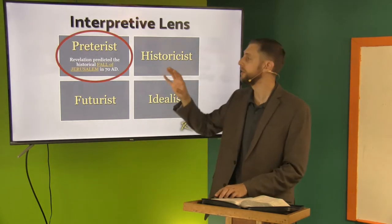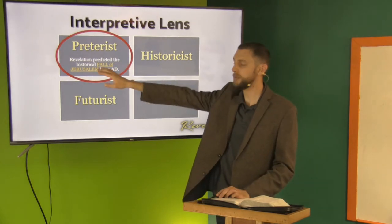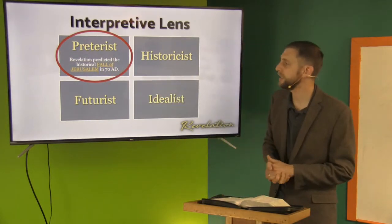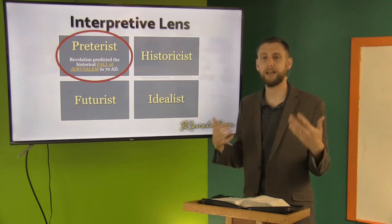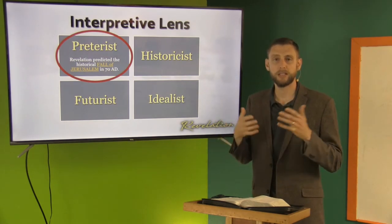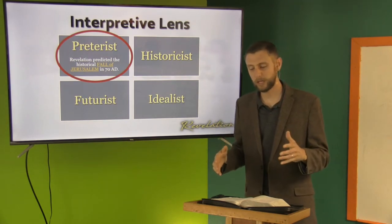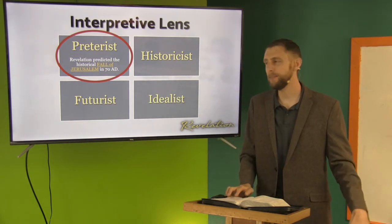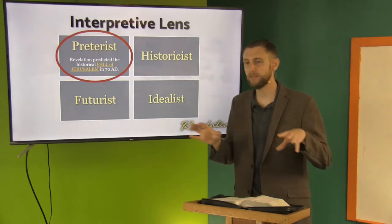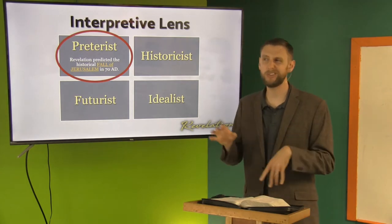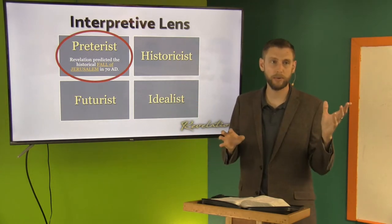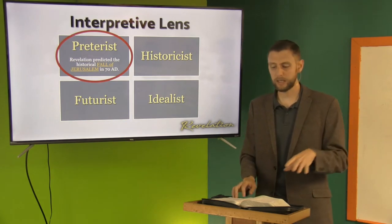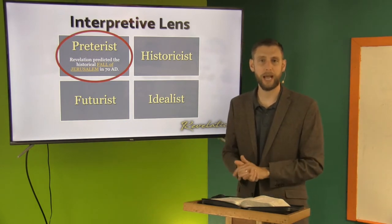Just a quick review. The preterist perspective, when reading this book, sees that Revelation predicted the historical fall of Jerusalem in 70 AD. Essentially, the book of Revelation happened sometime in the past — whether it was the fall of Jerusalem or the fall of the Roman Empire. They're reading these events as already happened.